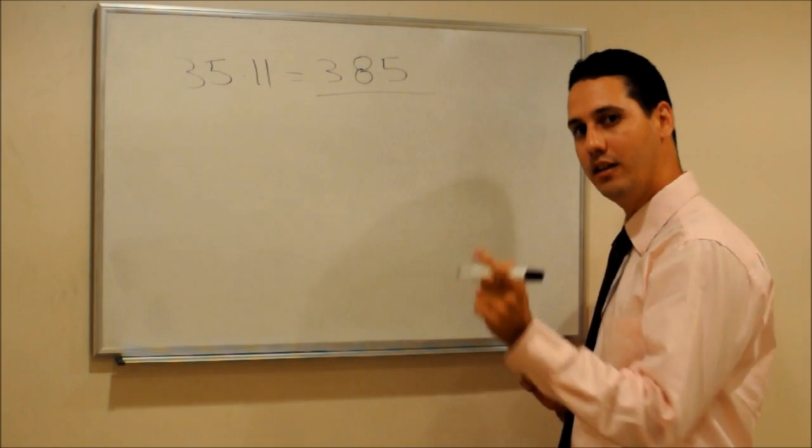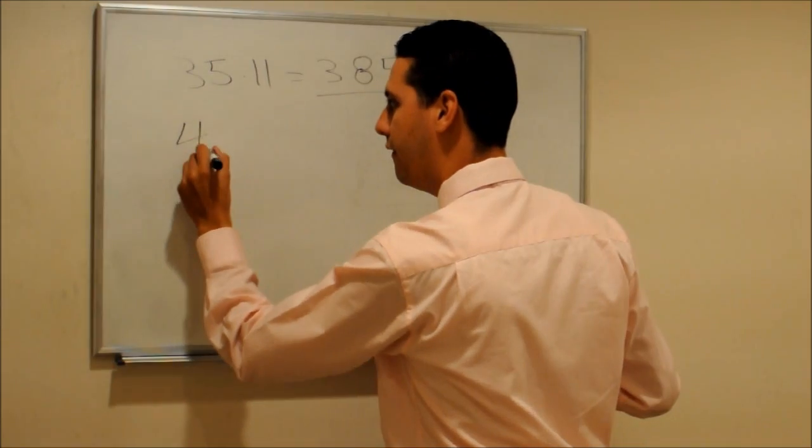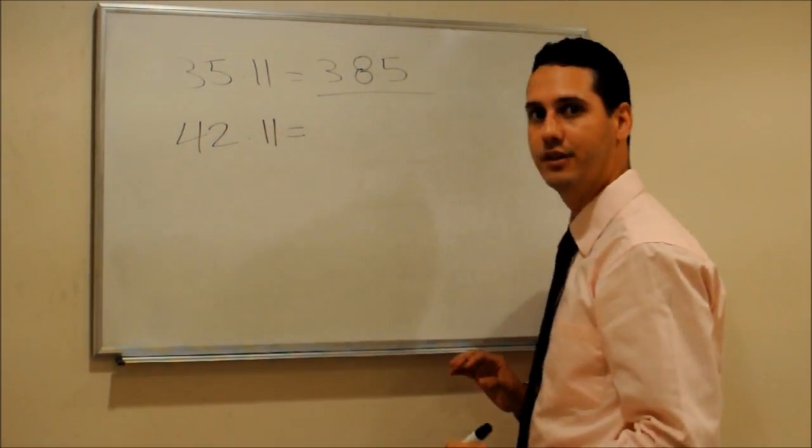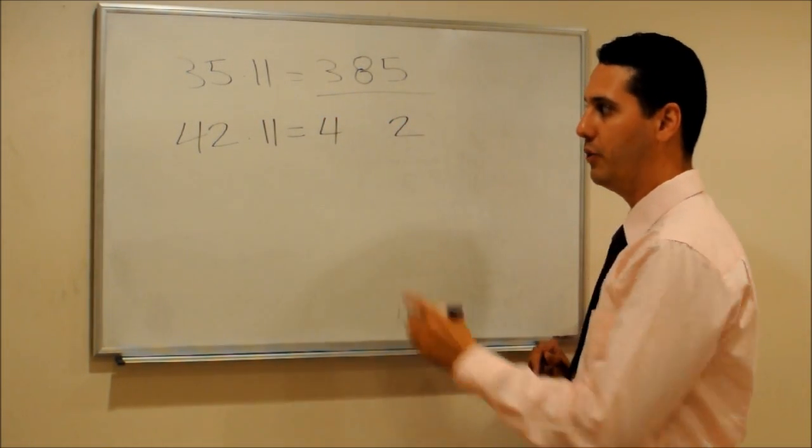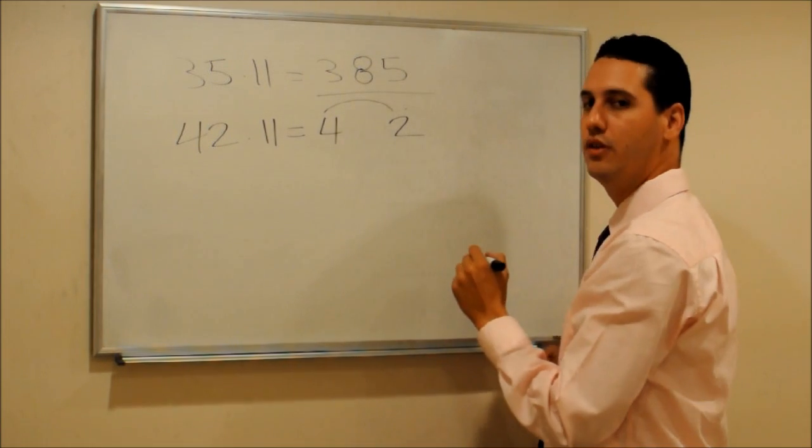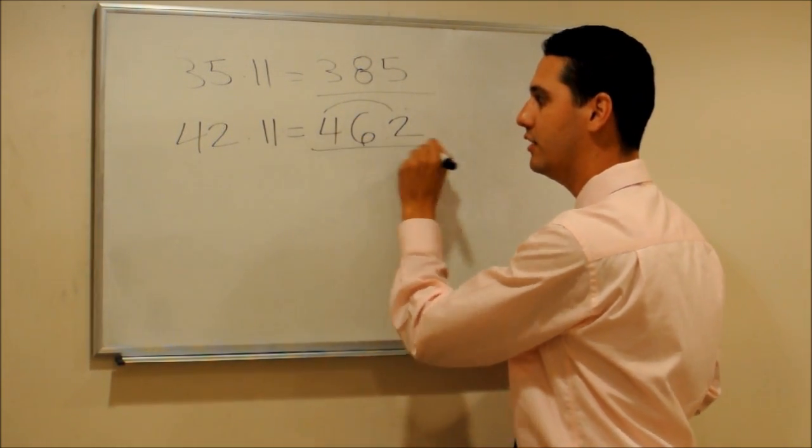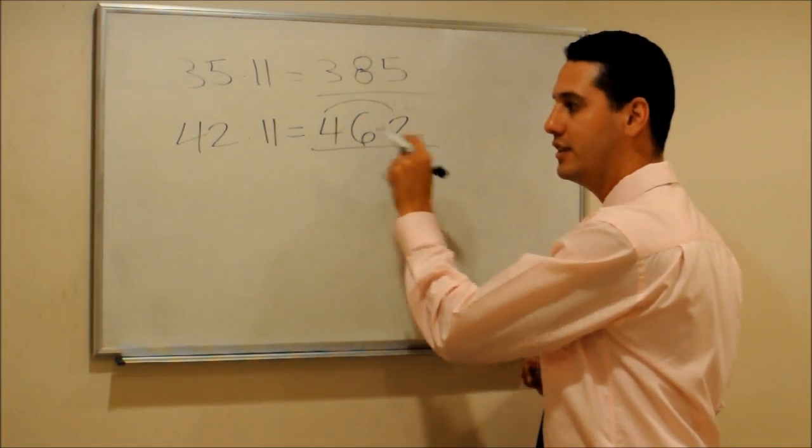Let's see if you got it. Let's try another one. 42 times 11. Let's write the 42 with space. What is 4 plus 2? 4 plus 2 is 6. So the answer will be 462.